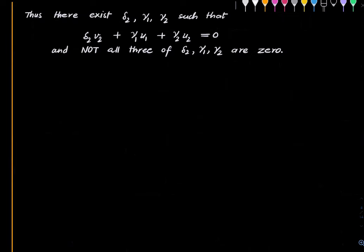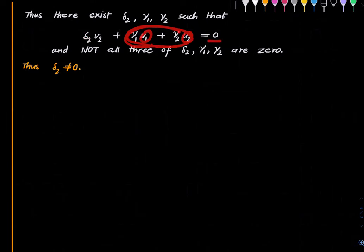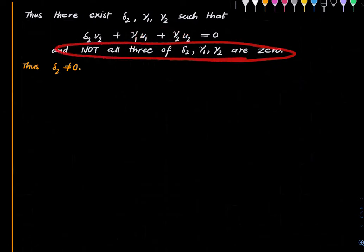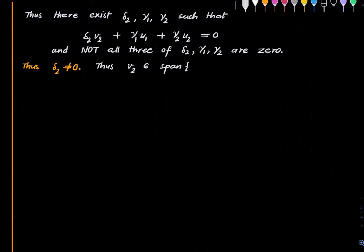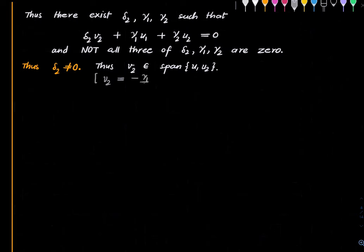This implies δ₂ is non-zero. Why? Because if δ₂ were 0, we would have γ₁u1 + γ₂u2 = 0. But u1 and u2 are linearly independent, so this forces γ₁ and γ₂ to also be 0, contradicting the choice of δ₂, γ₁, γ₂. So δ₂ is non-zero. This then implies v2 = (−γ₁/δ₂)u1 − (γ₂/δ₂)u2, so v2 is in the span of u1 and u2.